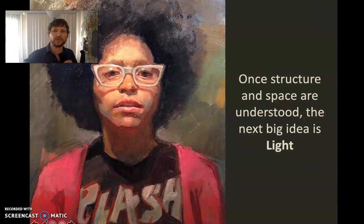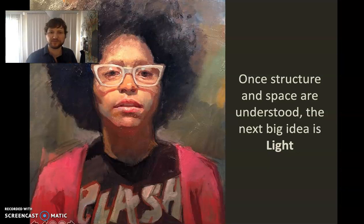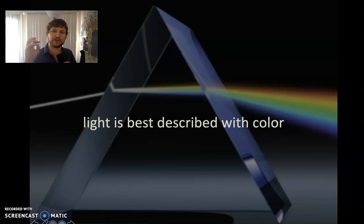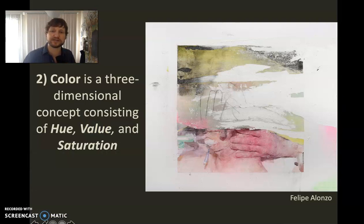Once you have the structure down, think about how to see anything in this world — you have to have some structure and you have to have light hitting that structure. So the next thing to understand is what the light is doing. Light is specifically described with color: if you take light and bend it through a prism, it turns into all the colors of the rainbow. Color is three-dimensional — hue is the name of the color (orange, red, yellow, etc.), value is how light or dark the color is, and saturation is how chromatic it is — whether it's washed out or fully saturated. You have to understand all three dimensions to use color well.